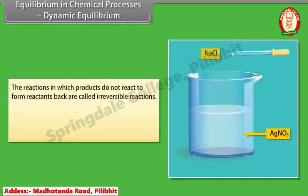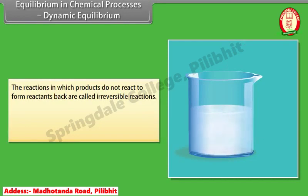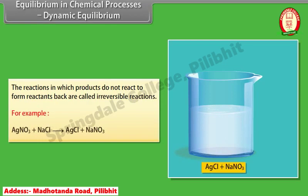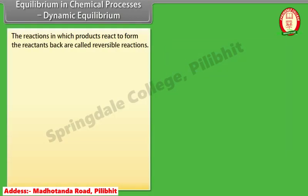The reactions in which products do not react to form reactants back are called irreversible reactions. For example, silver nitrate reacts with sodium chloride to give silver chloride and sodium nitrate. The reactions in which products react to form the reactants back are called reversible reactions, represented by two arrows pointing in opposite directions.